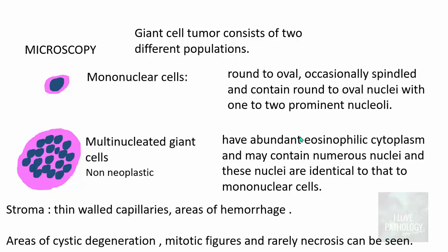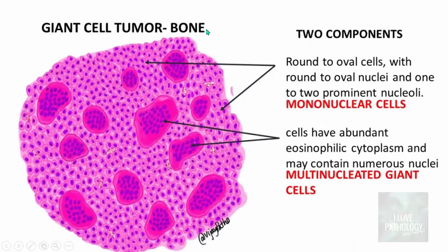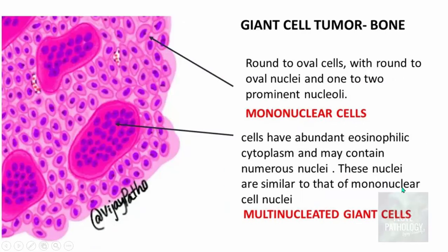The stroma usually contains thin-walled capillaries. You can see areas of hemorrhage, areas of cystic degeneration, mitotic figures, and rarely necrosis. This illustration of Giant cell tumor of bone clearly shows the two components — the mononuclear component and the multi-nucleated Giant cell component. At higher magnification, note that the nuclear features of the mononuclear cells and the multi-nucleated nuclei are all similar.